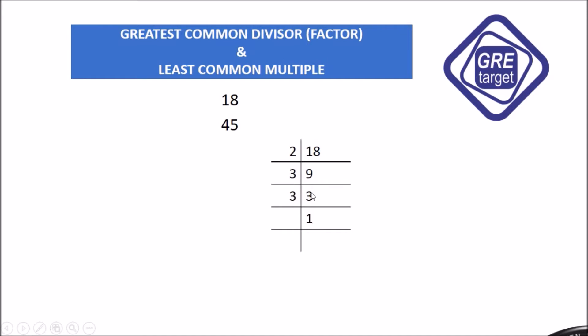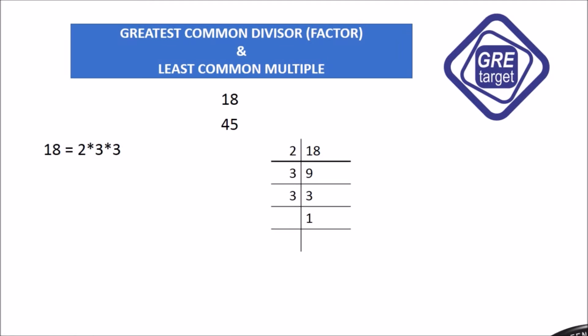Now we do the same for 45. But first, we have to write the answer for 18. Therefore, 18 equals 2 into 3 into 3. Now the same way, we start with 45.